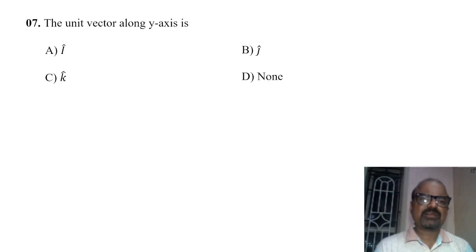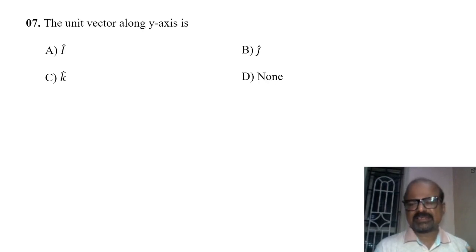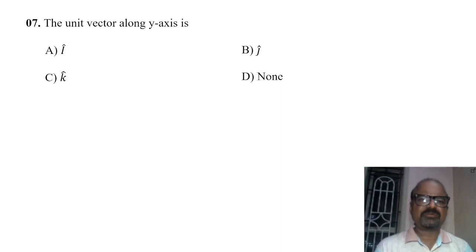Next, the unit vector along the y-axis. The unit vectors along x, y, z axes are fixed. The unit vector along the y-axis is j-cap.